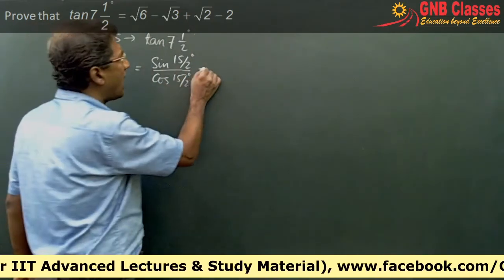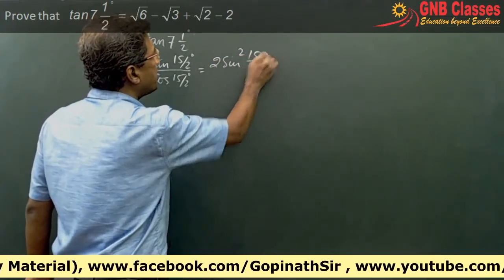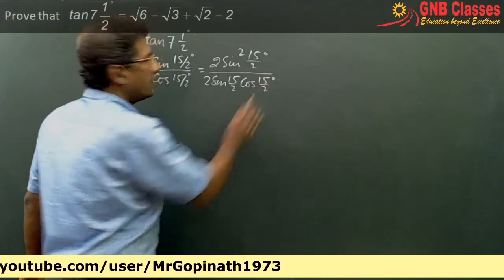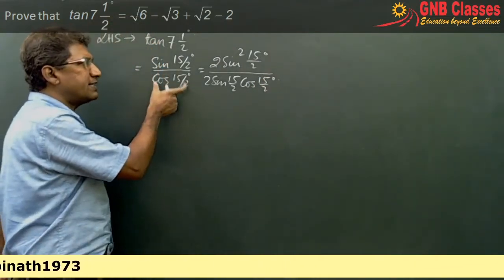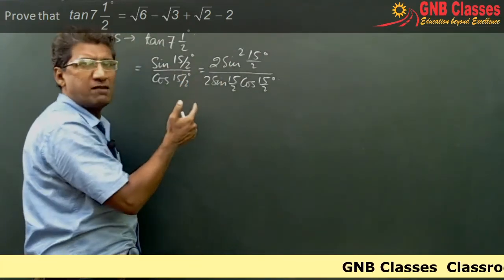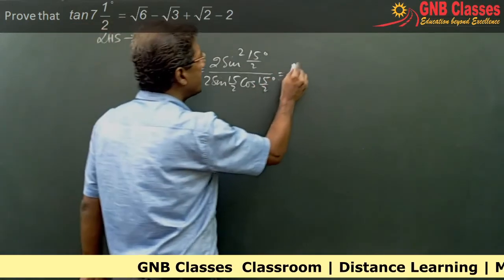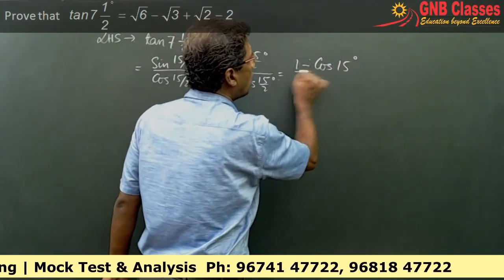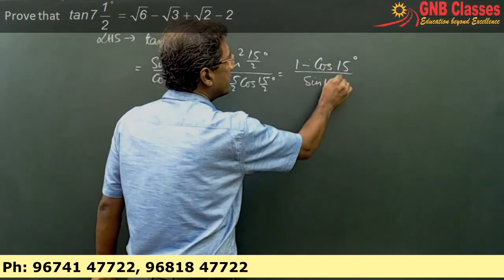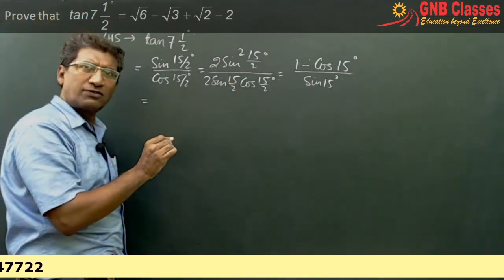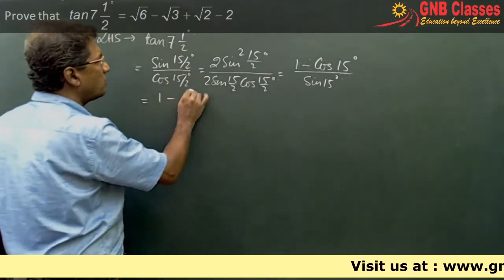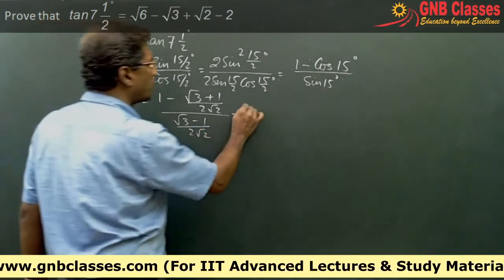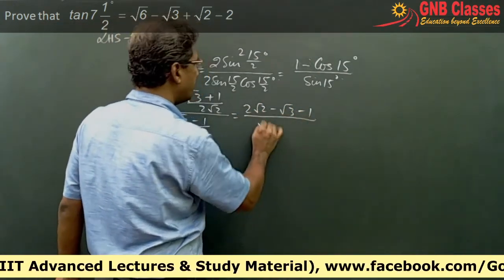Here the denominator is cos(15/2), so we multiply numerator and denominator by 2cos(15/2). The numerator becomes 2sin²(15/2), which equals 1 − cos(15°), and the denominator becomes sin(15°). Recall that cos(15°) = (√3 + 1)/(2√2) and sin(15°) = (√3 − 1)/(2√2). So the numerator gives (2√2 − √3 − 1) divided by (√3 − 1).